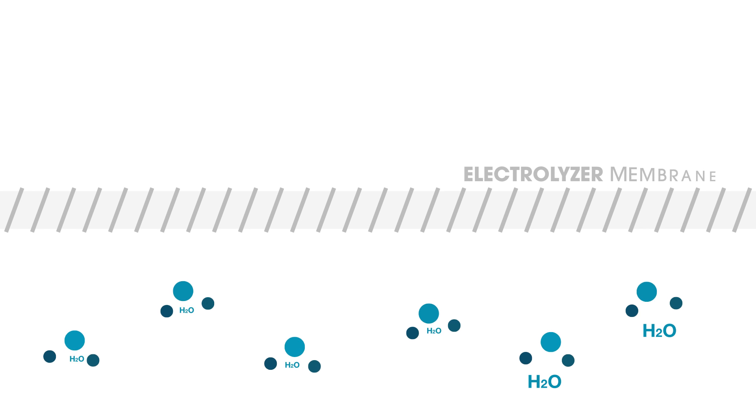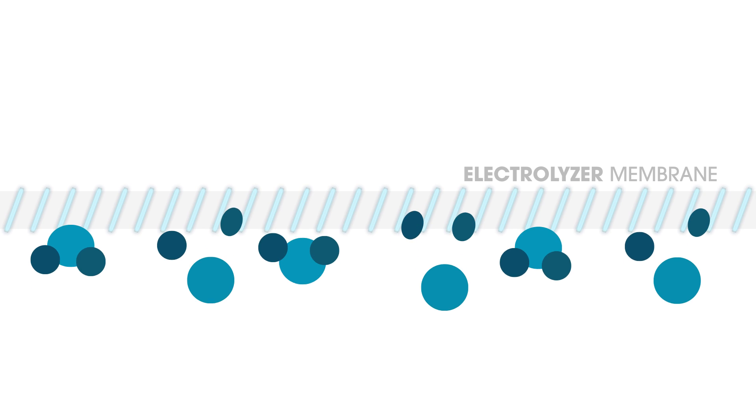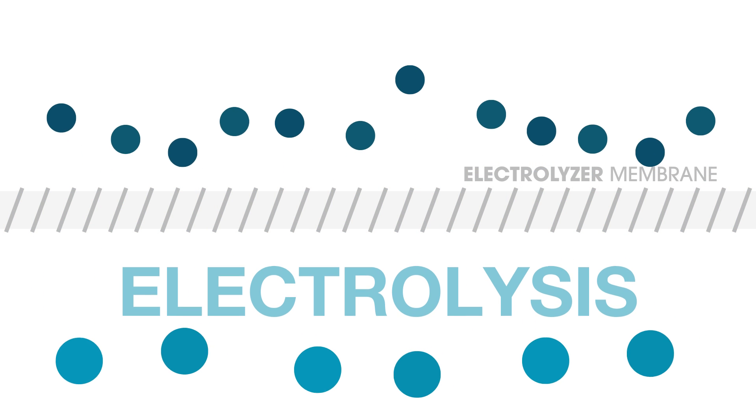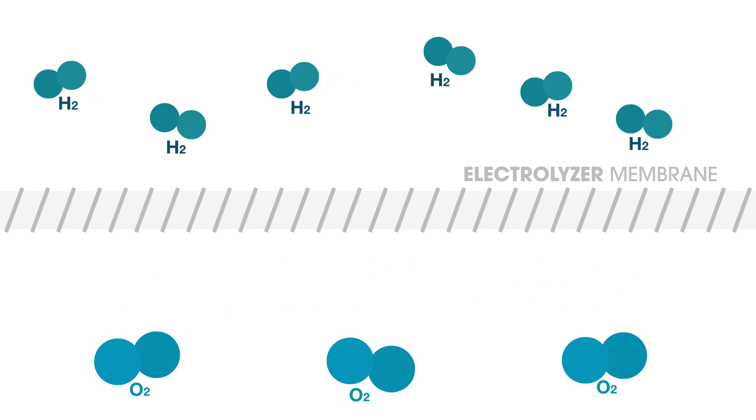The first step in the power to gas process is the splitting of water into hydrogen and oxygen. This is done through a chemical process known as electrolysis. The energy required to split the water is stored in the chemical bonds of the hydrogen molecules.